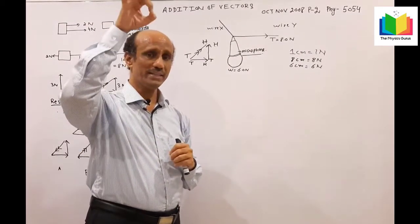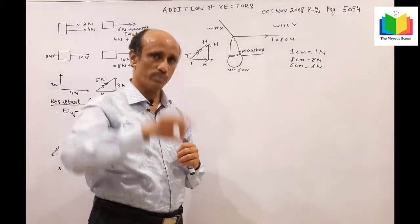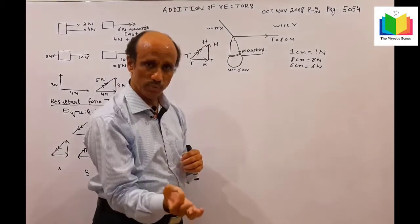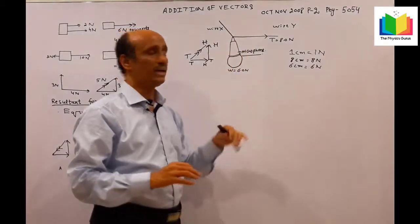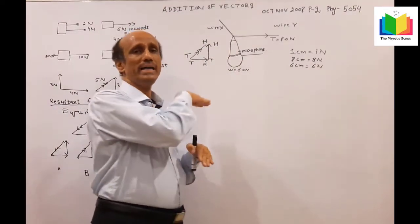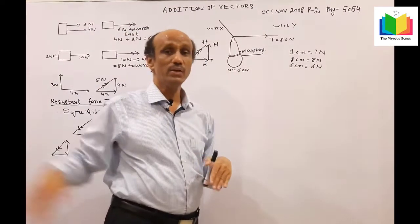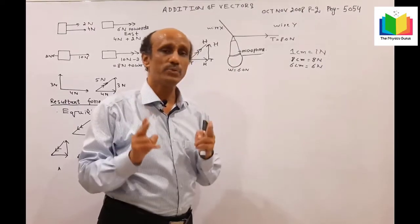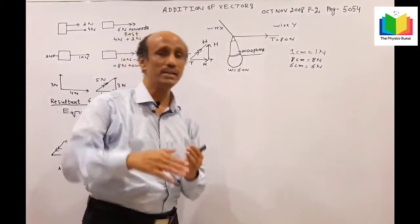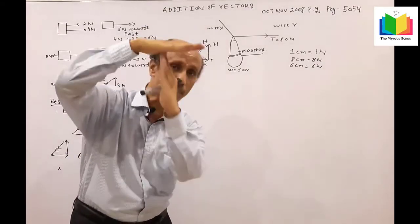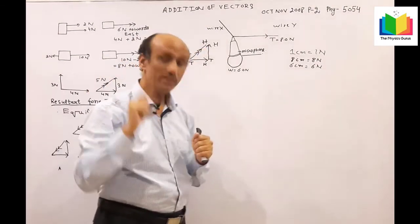Weight is a vector quantity that always acts in the downward direction, so it is a vertical force. The force of tension in wire Y is acting horizontally. What is the angle between vertical and horizontal? The answer is 90 degrees - they are perpendicular to each other.